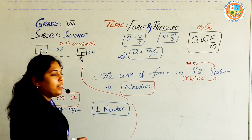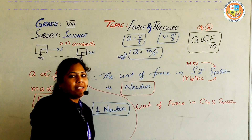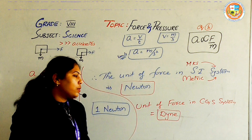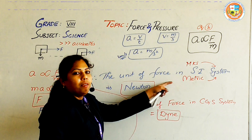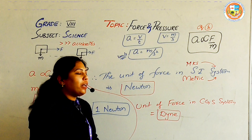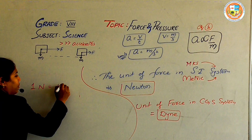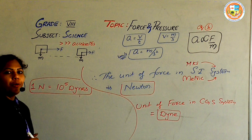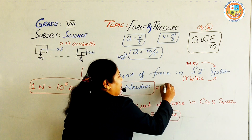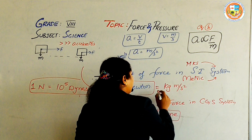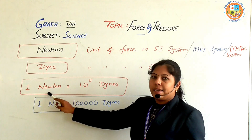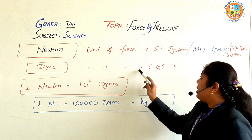What is the unit of force in the CGS system? CGS stands for Centimetre, Gram, Second. The unit of force in the CGS system is Dyne. In SI system we measure force in Newtons; in CGS system we measure force in Dynes. One Newton is equal to 10 to the power 5 Dynes. Newton is the unit in SI — international system of units; Dyne is the unit in CGS — centimetre, gram, second.